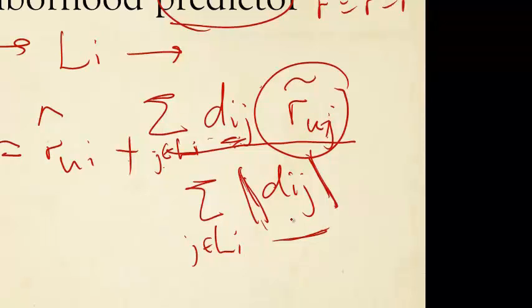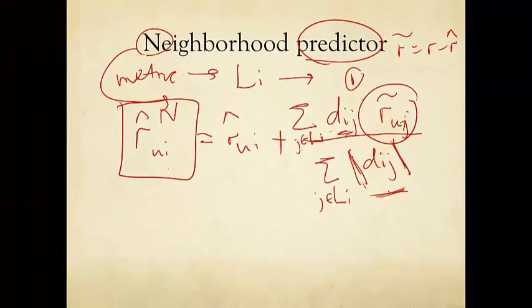Now, you can make it even simpler by just making the weights one. You simply just count, add up the r tildes and divide it by the size of the neighborhood. That's it. That turns out not to be performing very well. So we use a slightly more involved weights here.